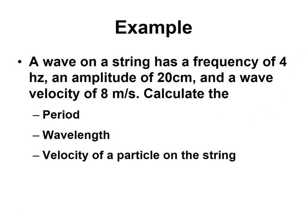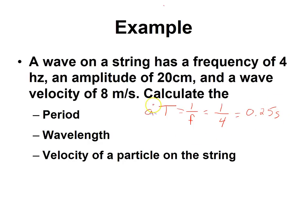Let's try an example problem: a wave on a string with a given frequency, amplitude, and velocity. We want to calculate the period, wavelength, and velocity of a single particle. For the period, recall that period equals 1 over frequency. Our frequency is given as 4 hertz, meaning four cycles per second. The time for one cycle is therefore 1/4 of a second, or 0.25 seconds.